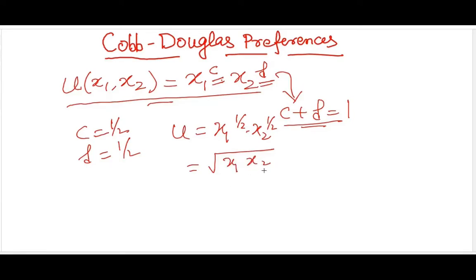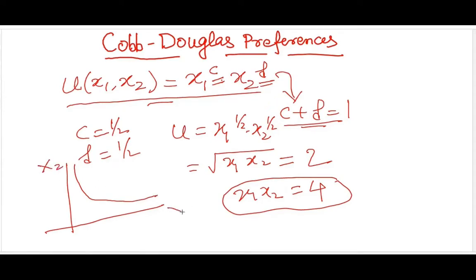So let's say I want to construct an indifference curve for this. So let me label it as 2 for instance. So x1, x2 is equal to 4. Now when x1, x2 is equal to 4, I can simply make this as an IC. Over here, this is your good 2, this is your good 1 and x1, x2 is equal to 4. Now let's change it to let's say 3. So this will change to 9. So you can increase it to 9 over here.